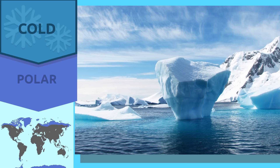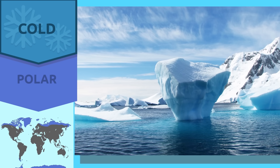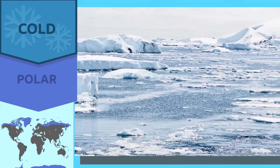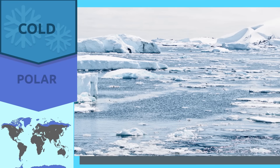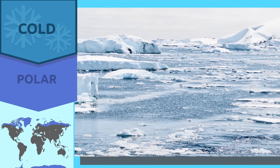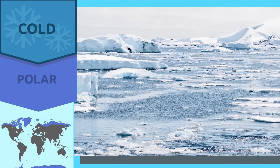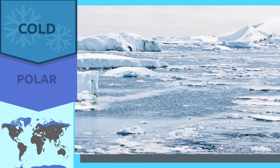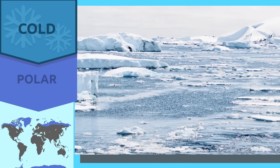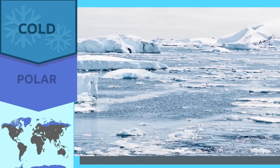The polar climate is located in places like northern Europe, North America, Russia, or the North Pole. It is characterized by being the coldest climate on Earth. Temperatures range from negative 58 degrees Fahrenheit in winter to 50 degrees Fahrenheit in summer, and precipitation is scarce.